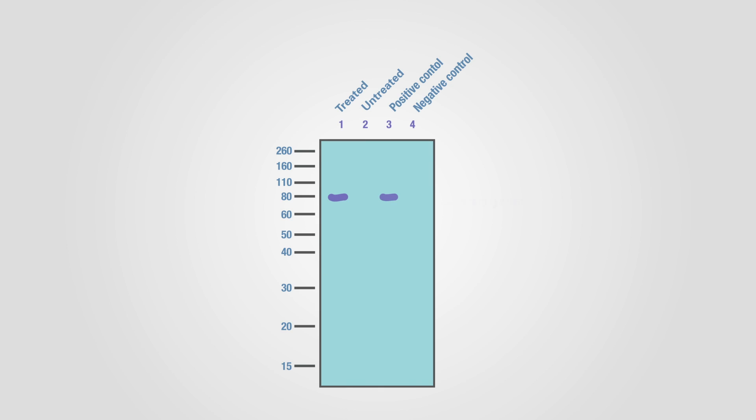Another suggestion is to use a known stimulant of phosphorylation of the target and add that to one lane of the gel as a positive control to confirm the assay is working as expected.